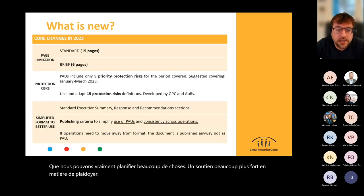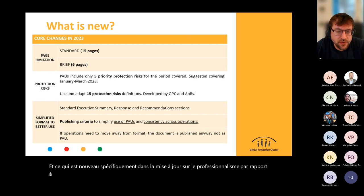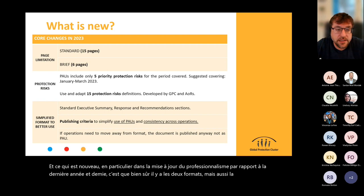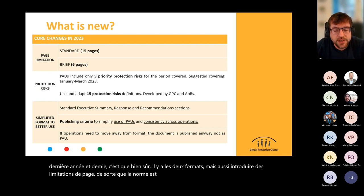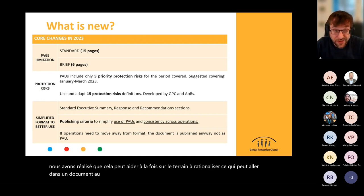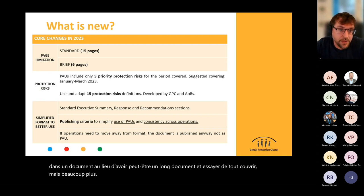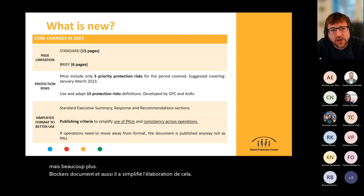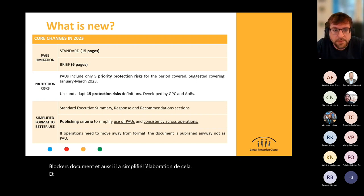What is new specifically in the protection analysis update compared to last year and a half: first, there are the two formats, but we also introduced page limitations. The standard is a maximum of 15 pages and the brief is six pages. We realize this can help in rationalizing what goes into a document — instead of long documents trying to cover everything, much more focused documents — and it also simplifies the elaboration.